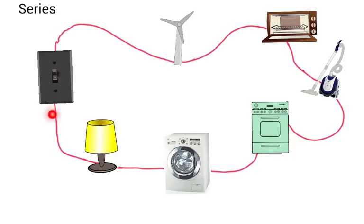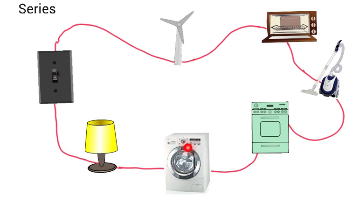The reason why houses are not wired in series is because otherwise when you flick the switch all these devices turn on, because the series circuit has only got one loop. So the electricity would have to go through the lamp bulb, into your washing machine, into your oven, into the vacuum cleaner, into the microwave, and then back to wherever it's getting powered, like this wind turbine here.